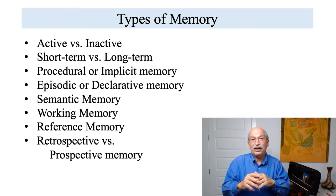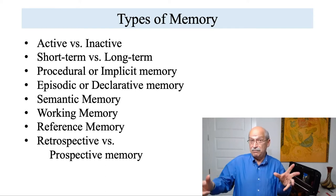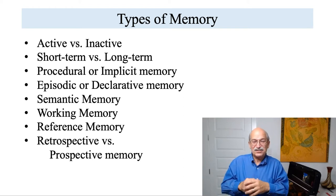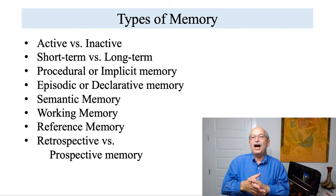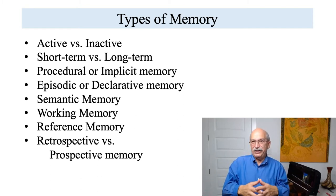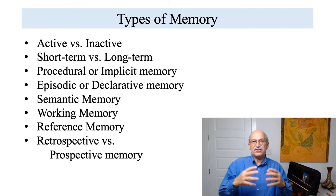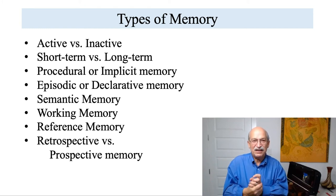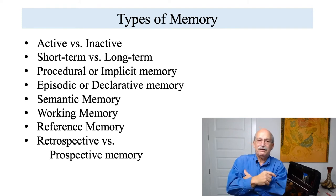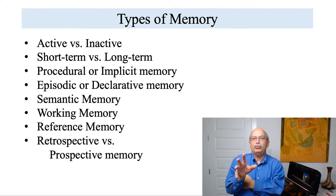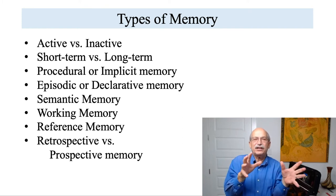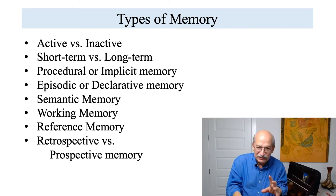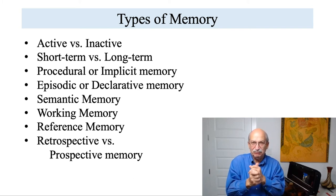Semantic memory, in contrast to procedural and implicit memory, has to do with how you do things, whereas semantic memory is memory for knowledge about the world — how many branches of government do we have, who is president, what's the capital of Texas. That's semantic memory. In this course, the kinds of conditioning and learning procedures we've been talking about mostly fall into the category of procedural and implicit memory.